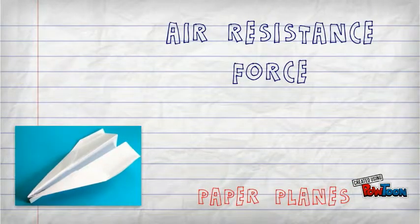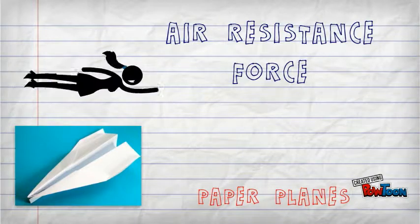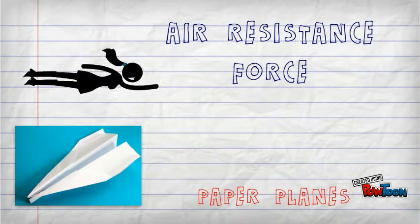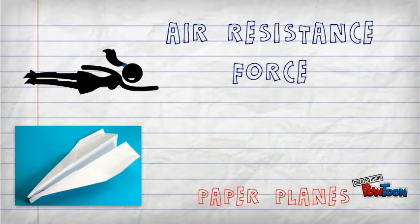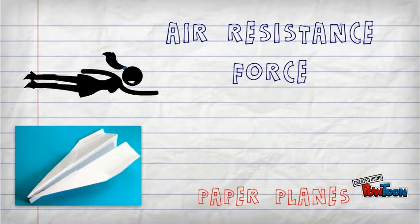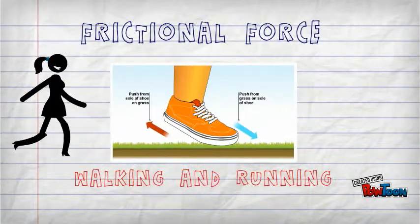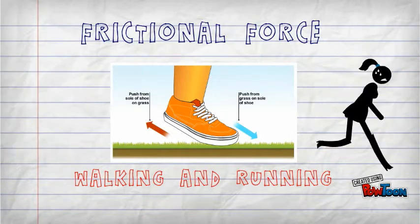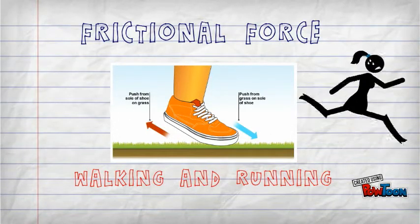The force generated between the toy and the shelf is called normal force. The wind flying underneath the wings of a paper aeroplane creates a special type of resistance called air resistance force. We use friction every time we walk or we run — it stops us from falling over.